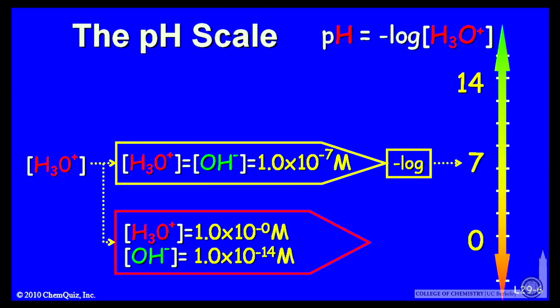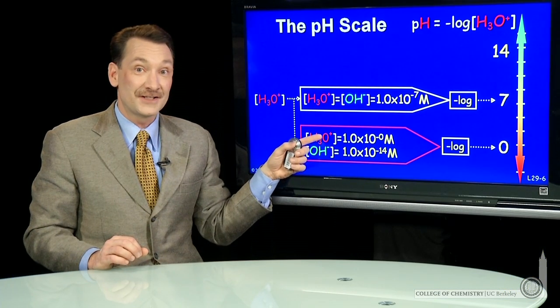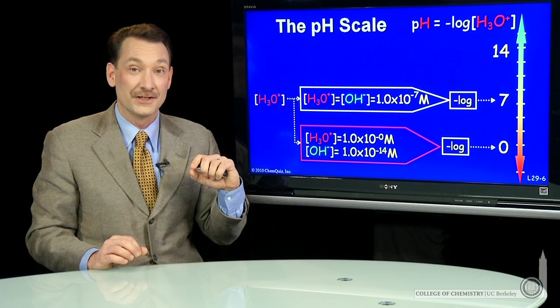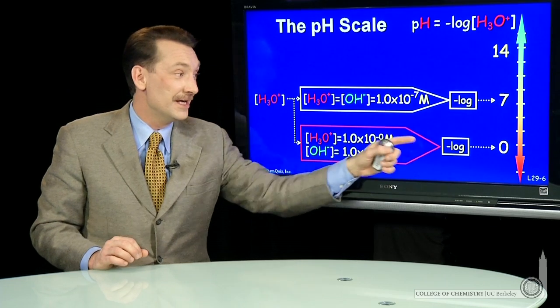So H3O+, when H3O+ concentration is high, say 1.0 times 10 to the minus 0 or 10 to the 0, that's 1. Minus log of 1 is 0. So the pH of a very acidic solution, high concentration of H3O+, is 0.